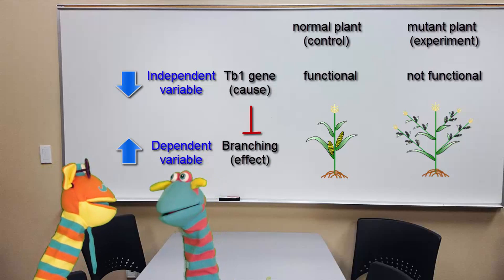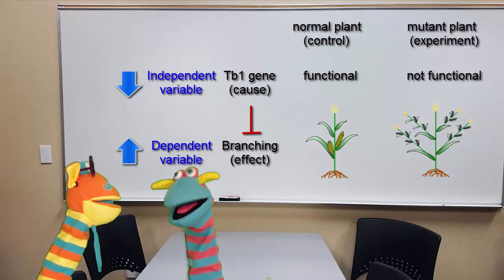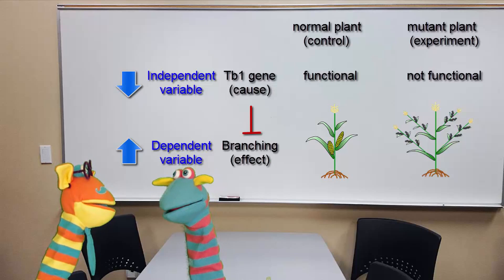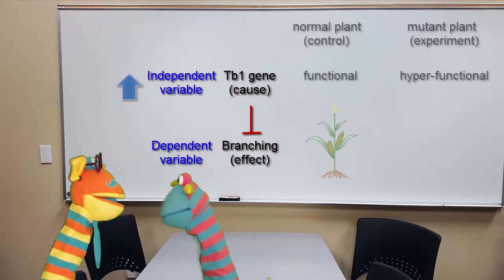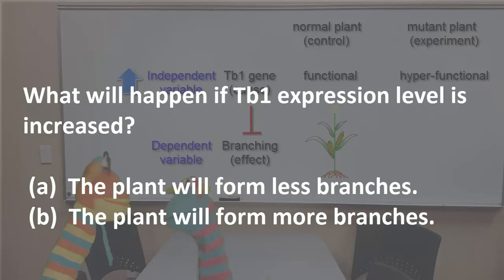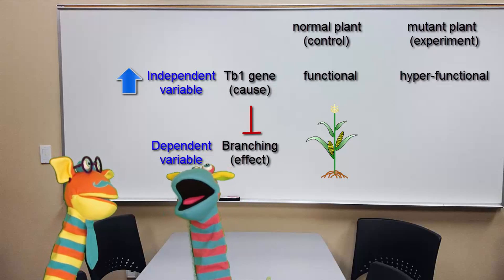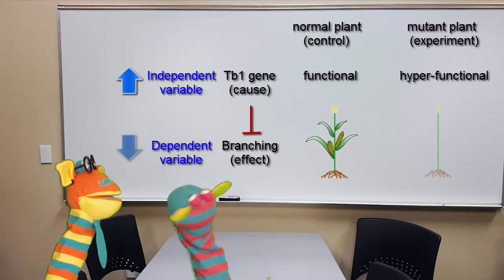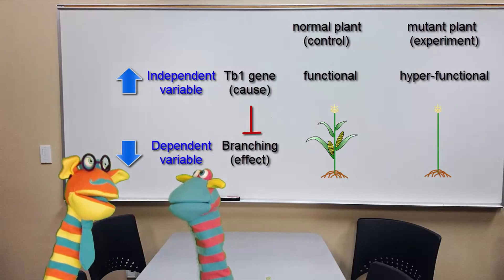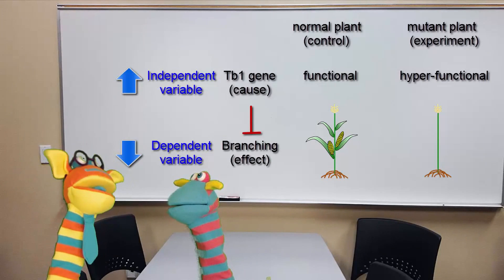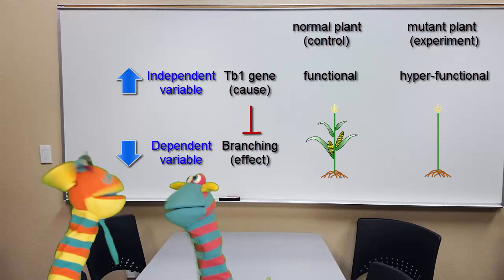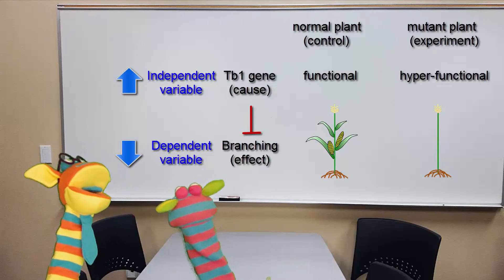So the conclusion would be that TB1 is required to inhibit branching? Exactly. What do you expect to see if you increase the expression level of TB1? Well, it inhibits branching, so I'd see less branching, right? Well done. In this experiment, since we increased the independent variable, this is a gain-of-function experiment. We can conclude that TB1 is sufficient to inhibit branching.